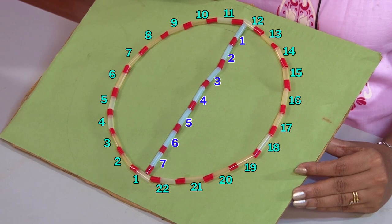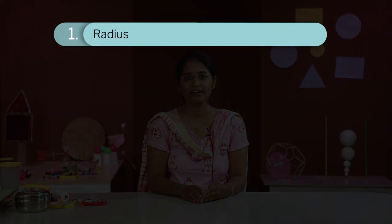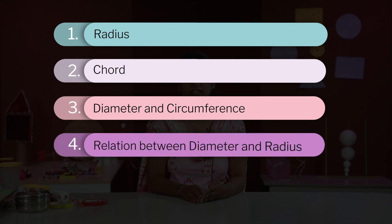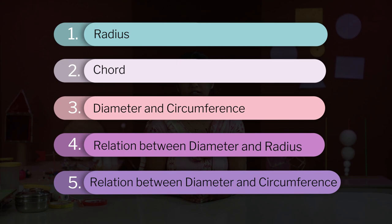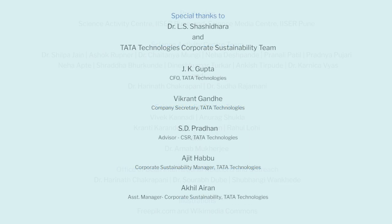Using this formula, we can calculate the diameter of a circle. In this video, we learned about the different parts of a circle which include radius, chord, diameter, and circumference, as well as the relation between diameter and radius and the relation between diameter and circumference. Hope you enjoyed this video. Thank you. For more information, please visit our website.